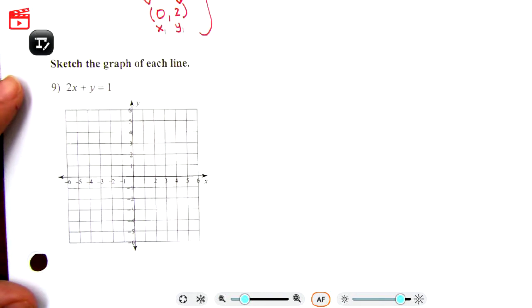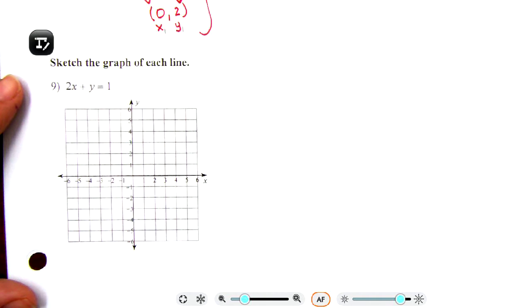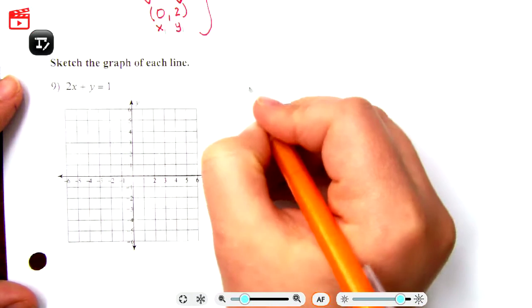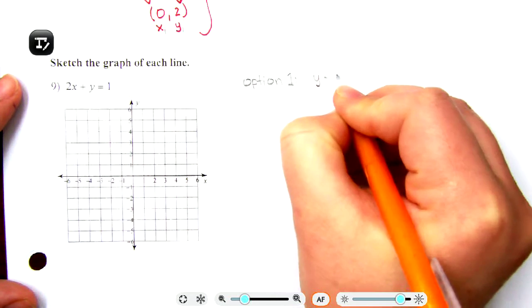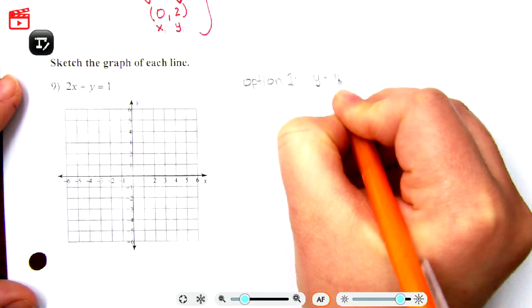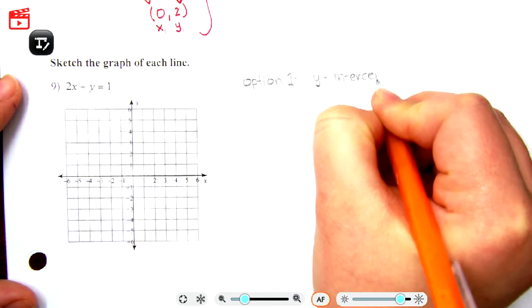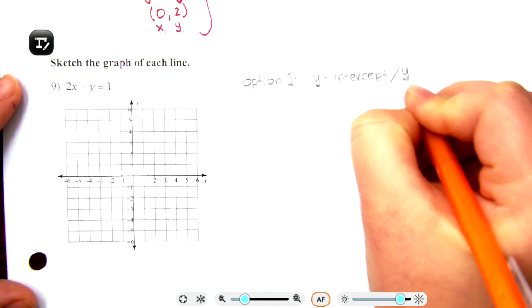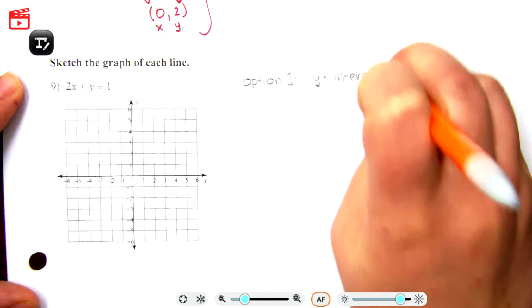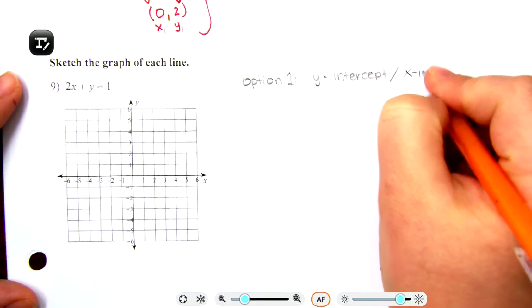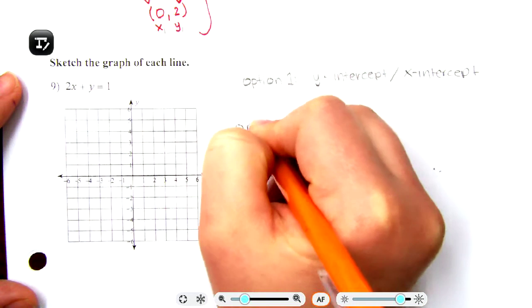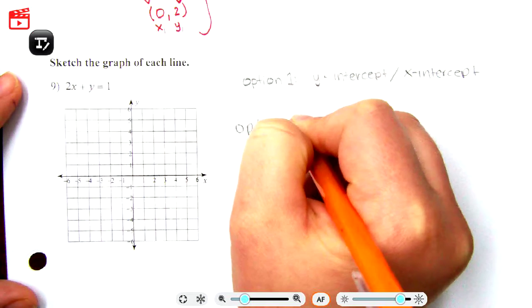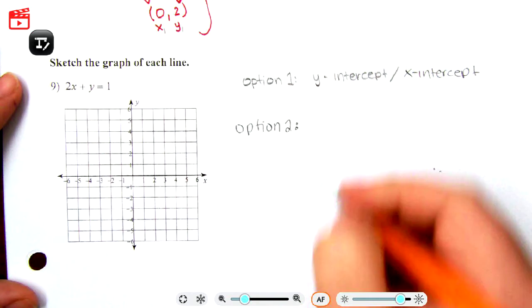Right over here says sketch the graph of each line. So you have options here and you may choose to do the x and y intercept, plot those points, or option two. Now option two is specific for standard form.